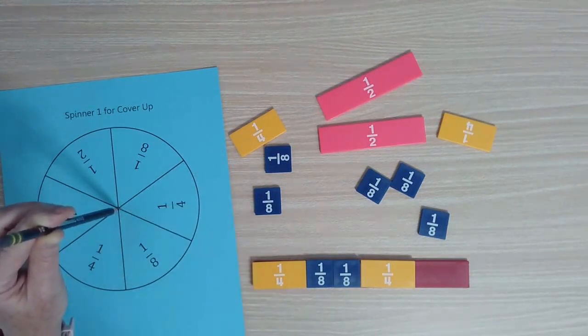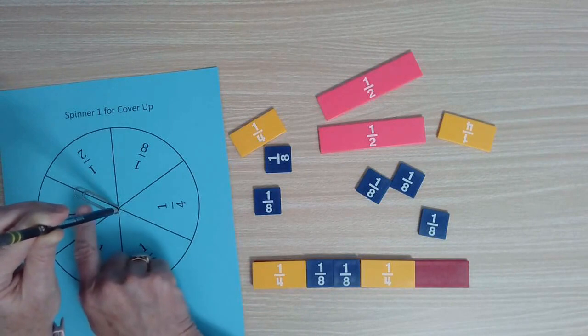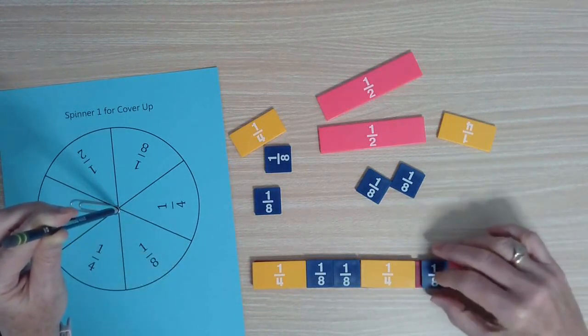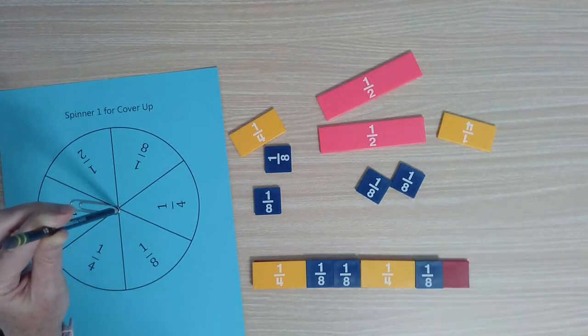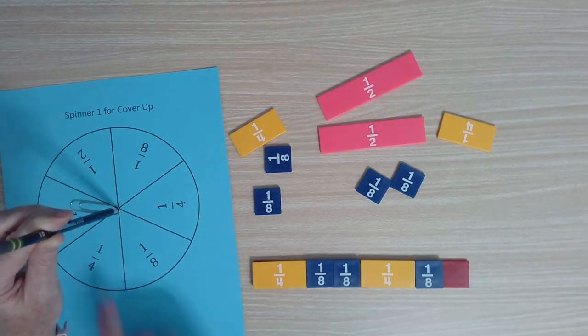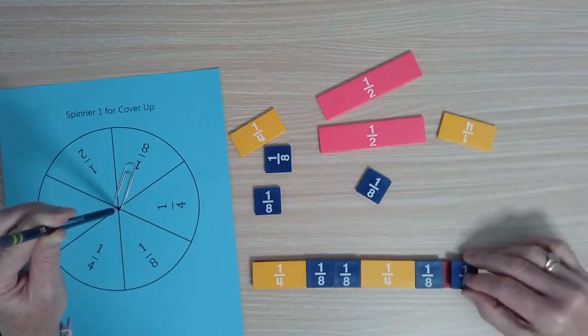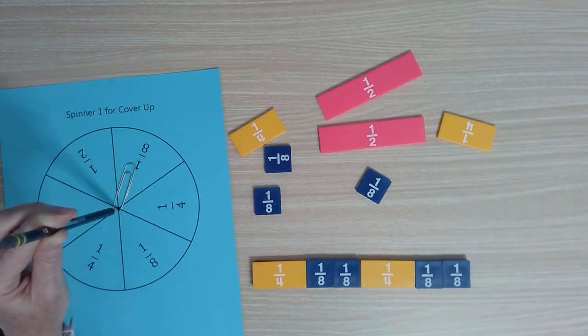Let's see what happens. I keep getting right in the middle there, so I'm going to pretend that's one-eighth. Now I put my one-eighth down again, and of course, the question is, what do I need to spin in order to cover my whole? I spin again, get one-eighth, and now I've covered the whole and the game is over.